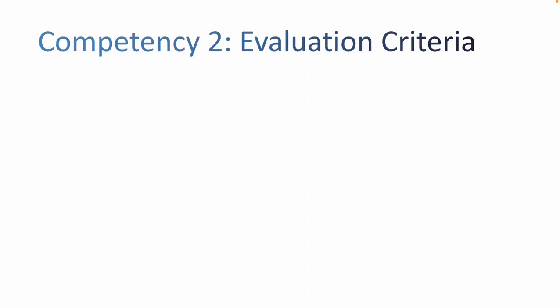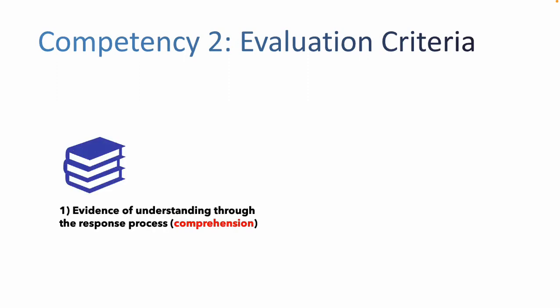To sum up, there are two main things we are evaluating in competency two. The first is evidence of understanding through the response process — this is a long expression we'll dig into more, but really it's comprehension: have the students understood? The other part is: can they take what they've understood and apply it? It's the what and then the how — taking ideas and language and applying them.